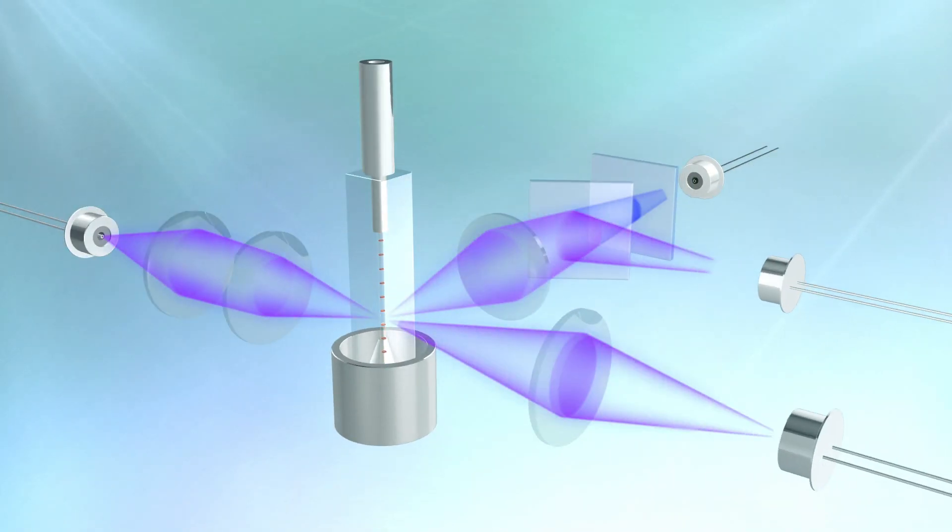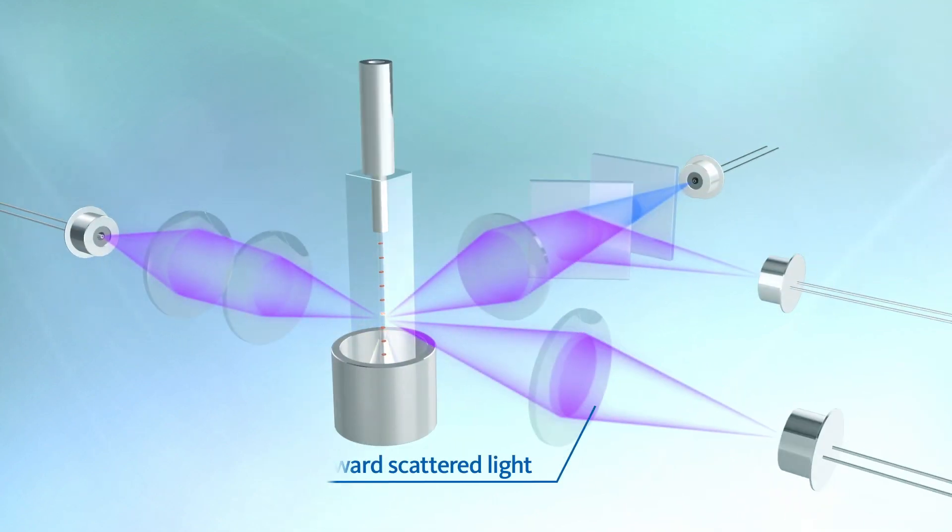The XN31 irradiates the cell with a 405 nanometer laser beam and counts the infected RBC by directly detecting the parasite's DNA, using forward-scattered light, side-scattered light, and side-fluorescence light.